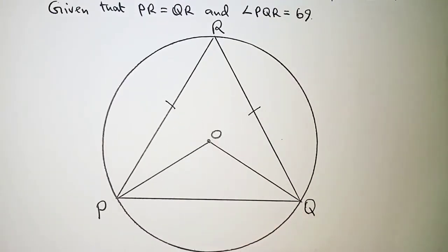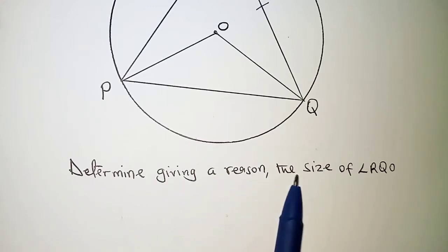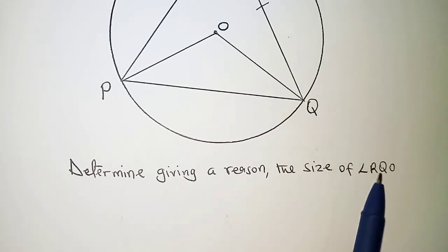Given that PR is equal to QR and angle PQR is 69 degrees, we have the diagram as shown. Determine, giving a reason, the size of angle RQO.